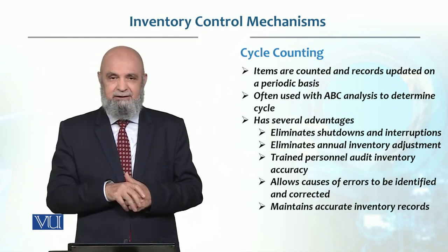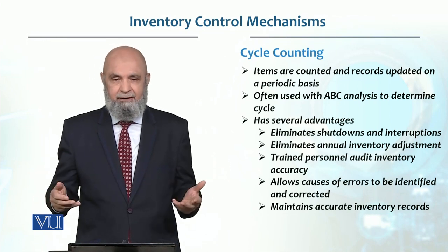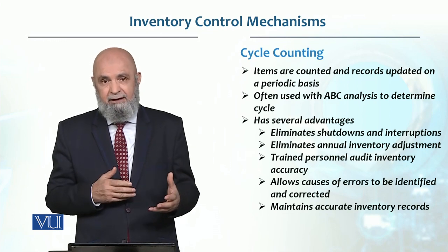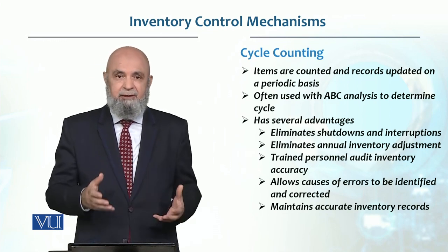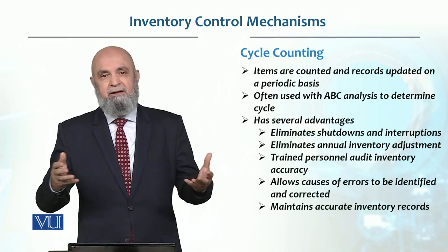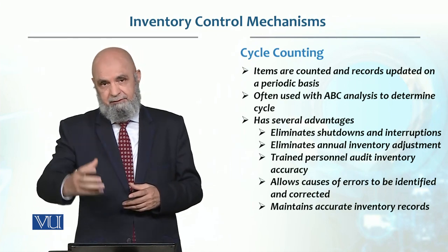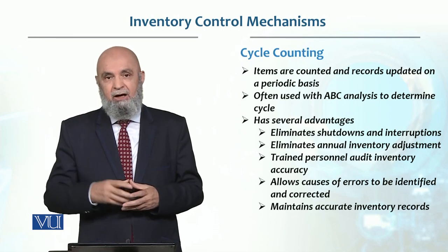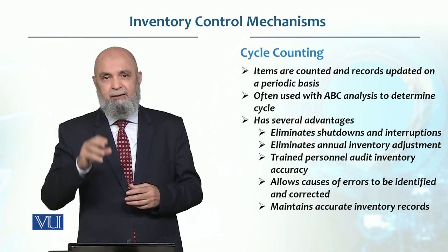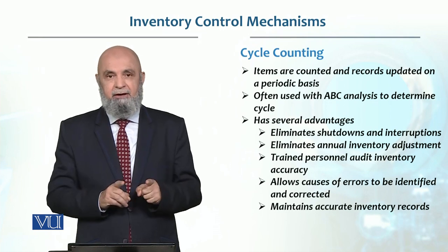Another benefit is that you will be able to see what the reason is for any discrepancy and tackle it. Let's say we are doing it once a month. Usually we use ABC analysis as the basis — for example, the A category, which is the most critical, we evaluate every month and do cycle counting every month, so each month we know how many units were there and how many were consumed.